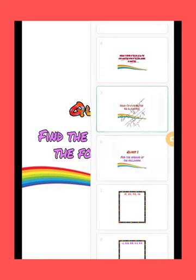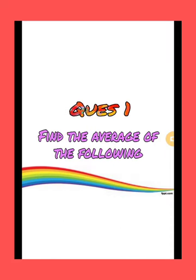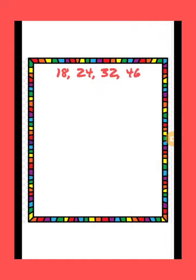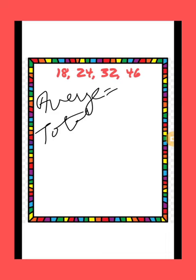Let's start with the question first. Find the average of the following. The first question is 18, 24, 32, and 46. These are the quantities. So the formula of average is equal to sum of all quantities.